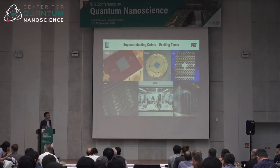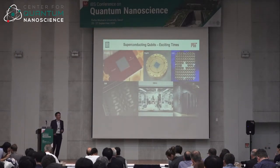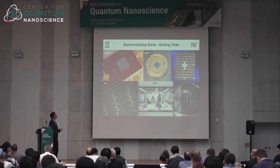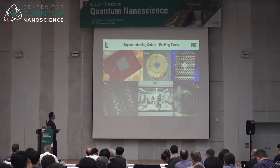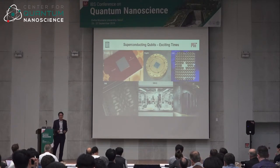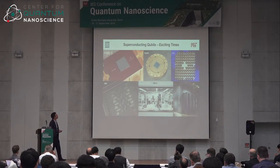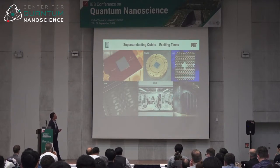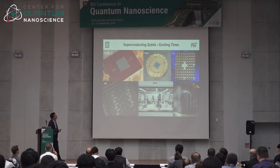It's an exciting time for superconducting qubits. Here is a picture of a 16-qubit chip from IBM, and this is Bristlecone from Google. Indeed, quantum supremacy appears to have been demonstrated by these folks. Rigetti also has online quantum computers.